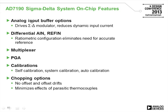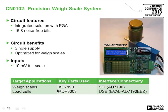The AD7190 features a switchable input buffer, ratiometric capability, an input multiplexer for multiple channels, built-in PGA, automatic calibration, several operating modes, and chopping options to minimize offset voltages from parasitic thermocouples. Reference design circuit note CN102, the precision weigh scale system using the AD7190, achieves nearly 17 noise-free bits.